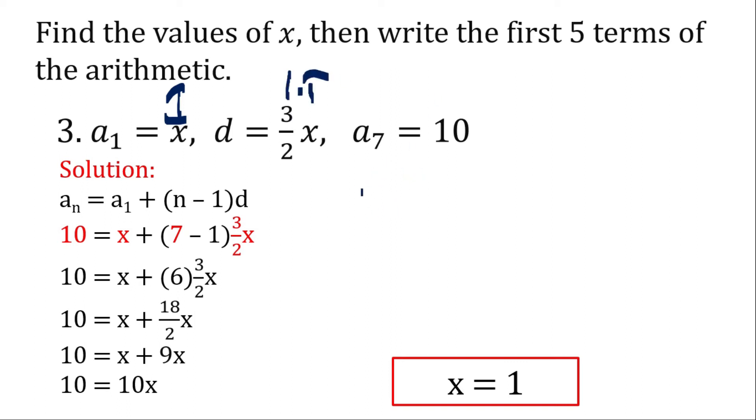So now let's write the first 5 terms. 1, 2.5, plus 1.5 is 4, 5.5 and last is 7. So this will be our first 5 terms.